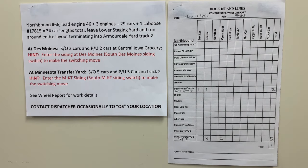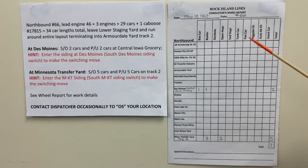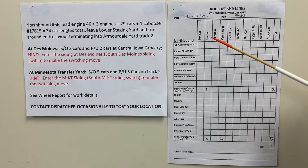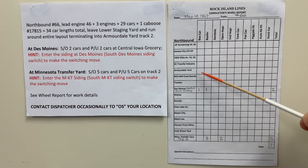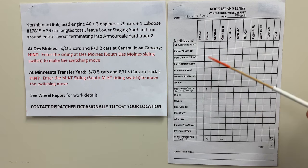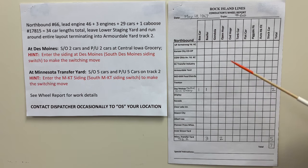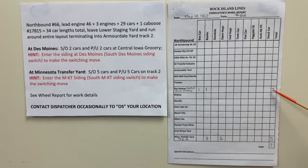I use a like-car-for-like-car-type approach, which means that we don't use car numbers and car initials. Basically when we set out a box car at a given location we pick up a box car. If we set out a refrigerator car we pick up a refrigerator car. So each location where a set out and pickup takes place will have the same car type available for the set out and the pickup.